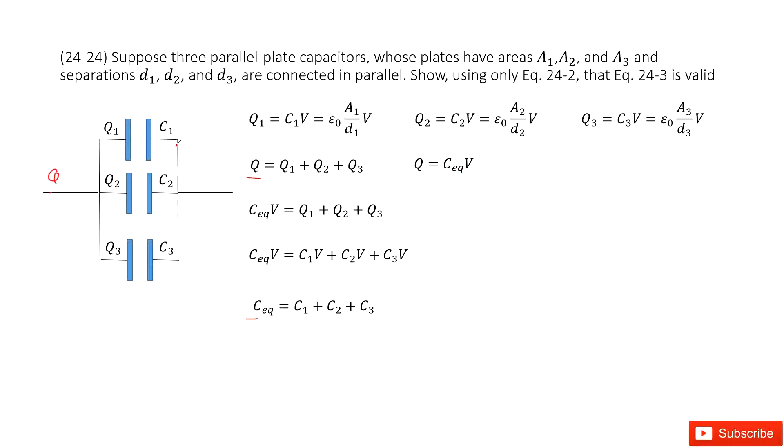Also we know this is a parallel connection, so the potential for C1, C2, C3 are equal. So Q1 equals C1 times V, where C1 is the capacitance for the first capacitor and V is the potential. Similarly, Q2 equals C2 times V, and Q3 equals C3 times V.